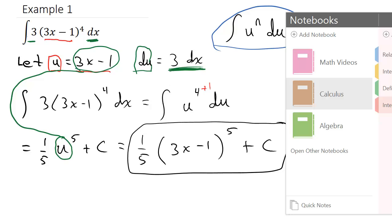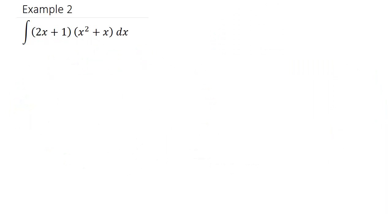Let's take a look at another one. Here I have the integral of (2x plus 1) times (x squared plus x). Both factors are in parentheses, so which one do I let u equal? We could foil this out and integrate each term, but if you had a 5th or 6th power you'd have no choice but to use u-substitution. So let's go ahead and do that here.